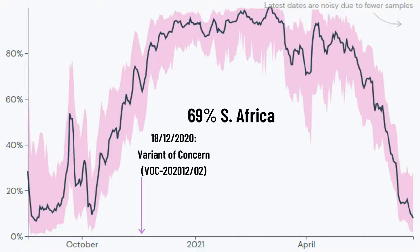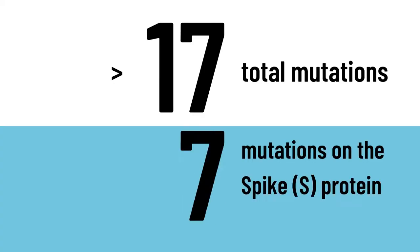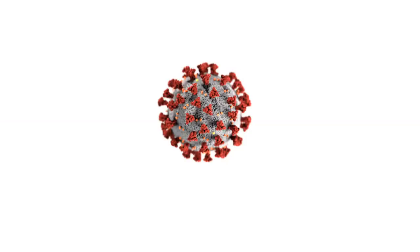On 18 December 2020, the beta variant was classified as a variant of concern. From the genetic sequencing of many virus samples from infected individuals, it was discovered that the beta variant has accumulated over 17 mutations with about 8 mutations on the spike protein. This is significant as the spike protein is involved in both the transmissibility of the virus and the immune response by the host. The red protrusions on the surface of the virus are the spike proteins.